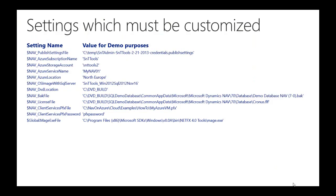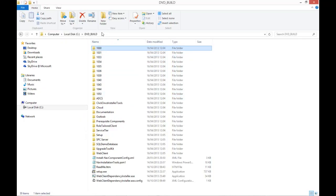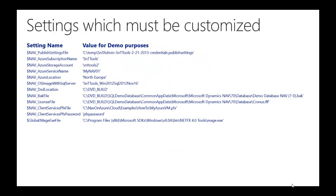The next setting is NAV DVD location. This setting should contain a path to the Microsoft Dynamics NAV installation media — in my case, I have stored it on my C drive. The next setting is NAV back file. This setting should point to a SQL Server backup file containing the Microsoft Dynamics NAV database you want your NAV on Azure instance to use. For demo purposes, you can use the standard Cronus database backup file which is available in the NAV installation media in the path shown here.